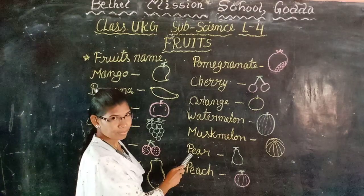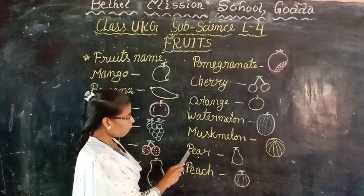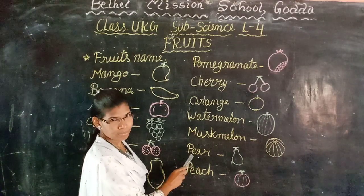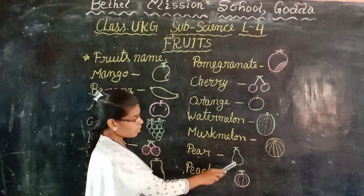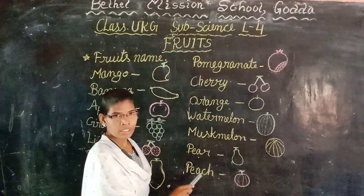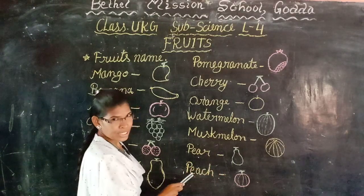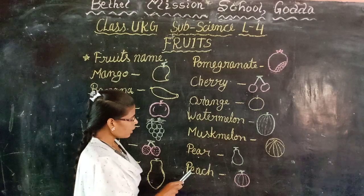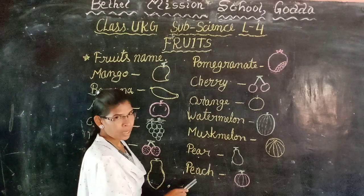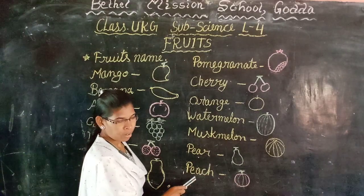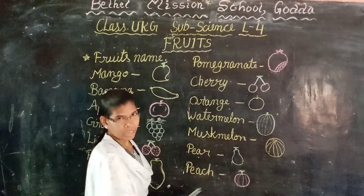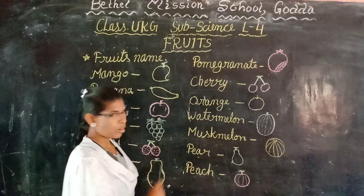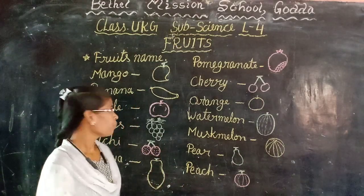Pear — P-E-A-R. It is green in color. Peach — P-E-A-C-H. It is red in color. So now I will read out all these fruit names.